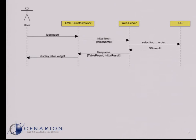We get back the result from the database to our web server and create the response for the client. We create a table result and add some metadata — which we call the initial result. When the client calls for the first time, we send the captions for the different columns, whether this column is sortable, whether this column is not sortable, or whether this column has certain filter values.